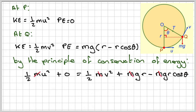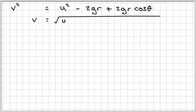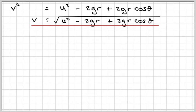The M's all cancel out. What we're going to do now is multiply this through by two. So we get that U squared is going to be V squared plus 2 G R minus 2 G R cos theta. And then making V squared the subject, we get that V squared is going to be U squared minus 2 G R plus 2 G R cos theta. And then to find V, we just take the square root. So it's interesting that the velocity is independent of mass.